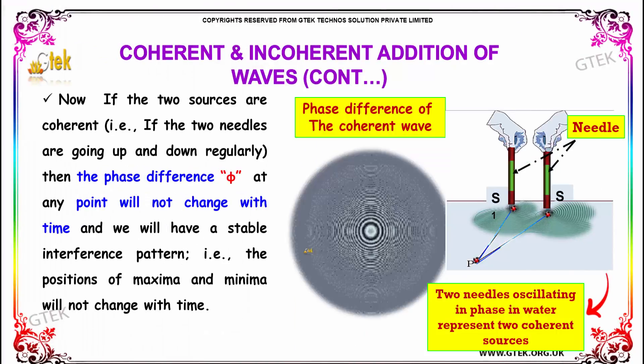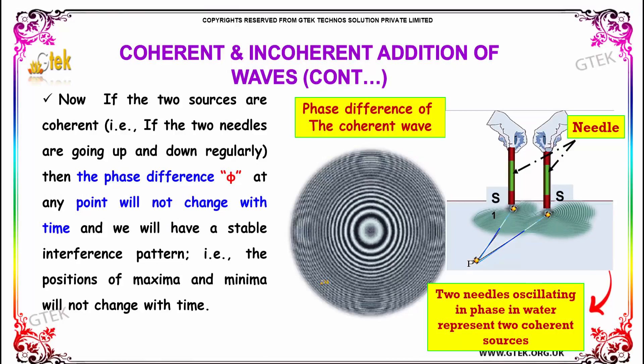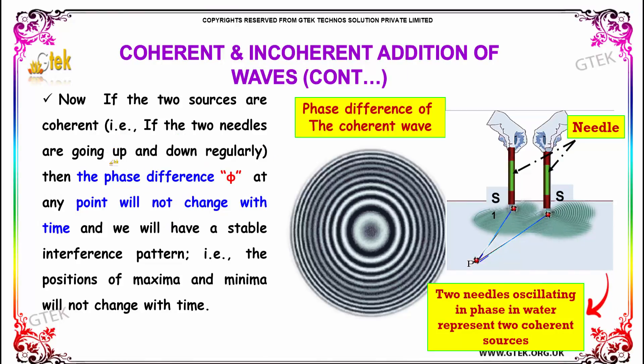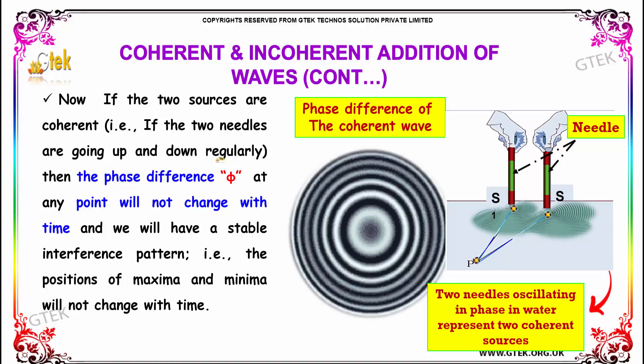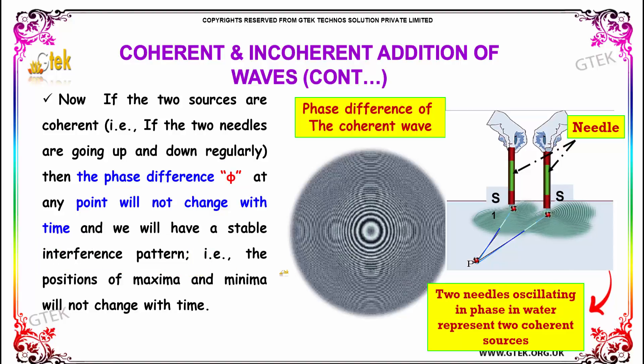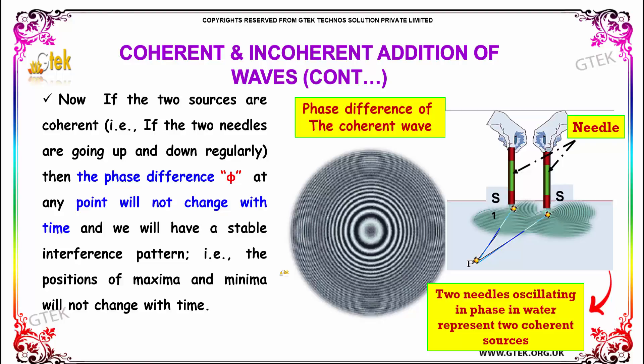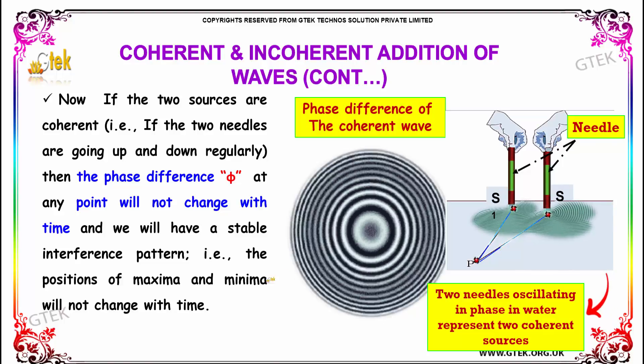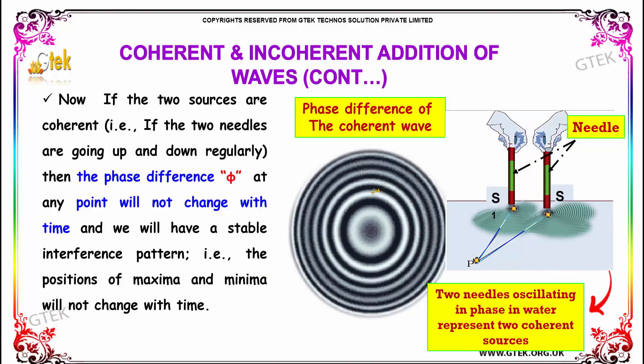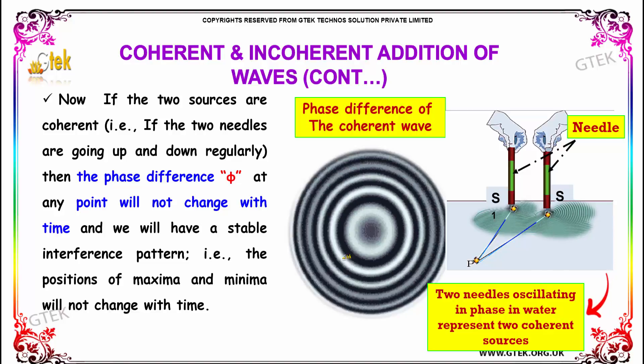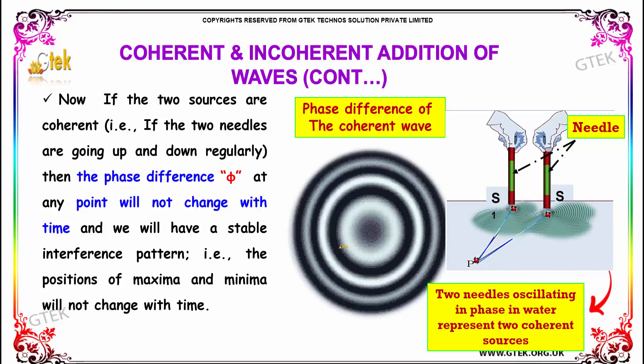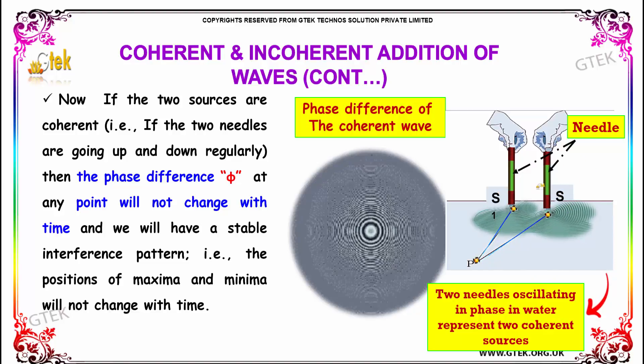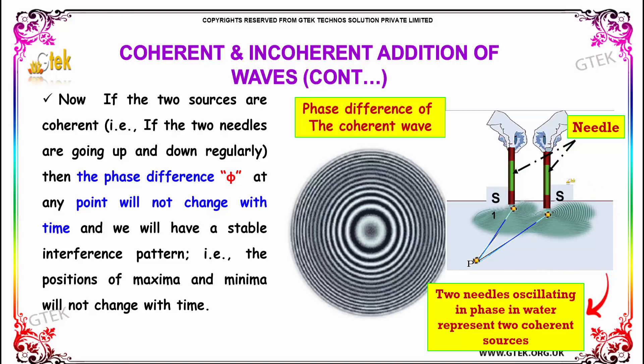Now if the two sources are coherent, that is if the two needles are going up and down regularly, then the phase difference φ at any point will not change with time and we will have a stable interference pattern. The positions of maxima and minima will not change with time. This is the concept of coherent waves where the two needles are going up and down in phase.